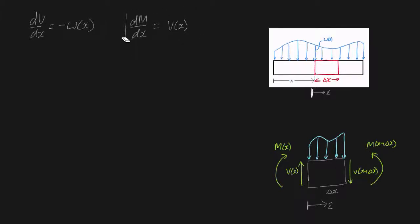Okay, so let's get started. In order to do this, what I'm going to do is take the sum of moments around this point just here, which I'll call point O. So the sum of moments around point O is equal to zero, and we know that because it's in static equilibrium it must be equal to zero.